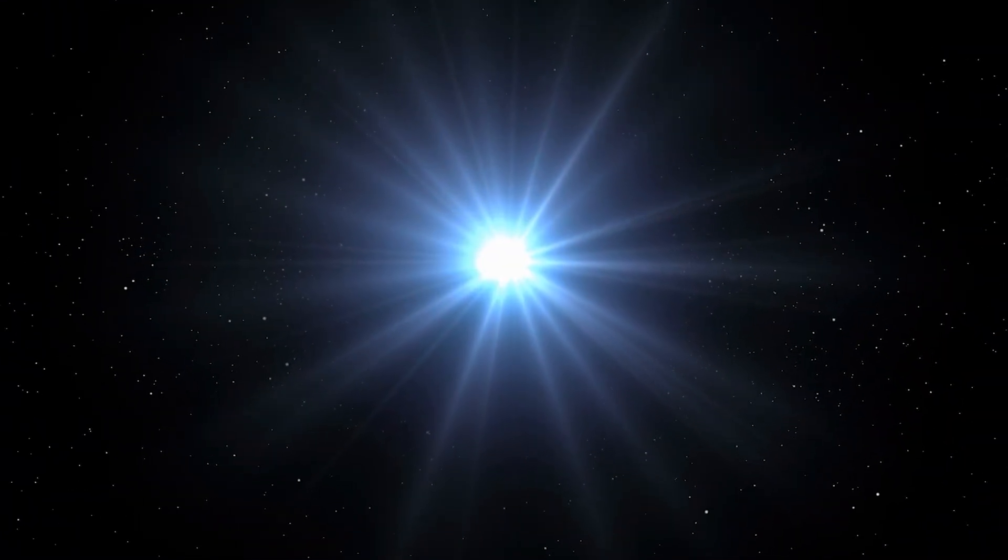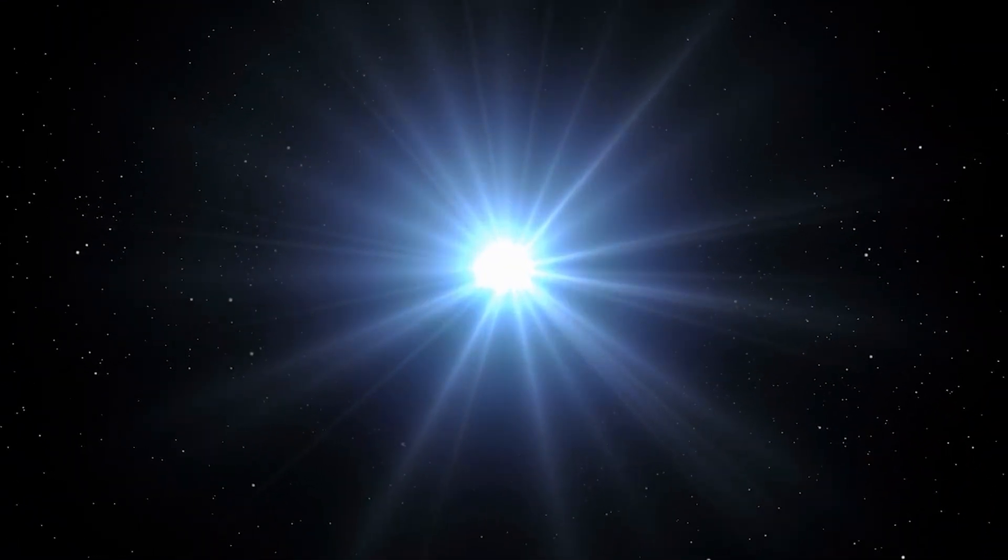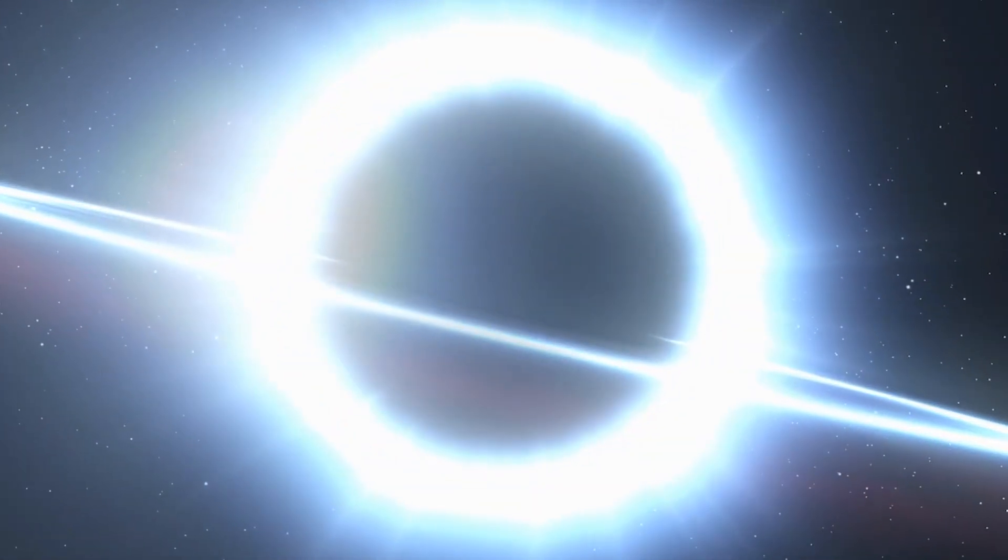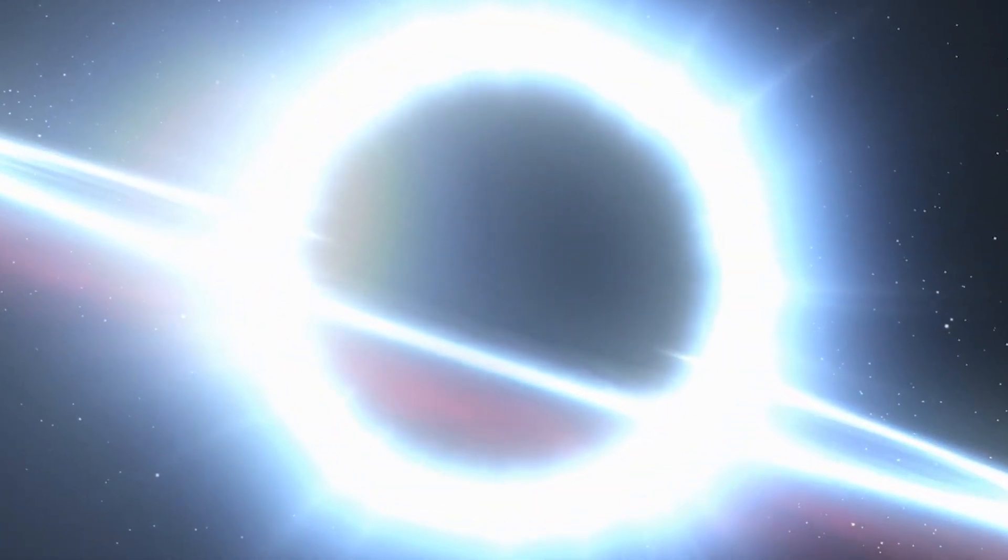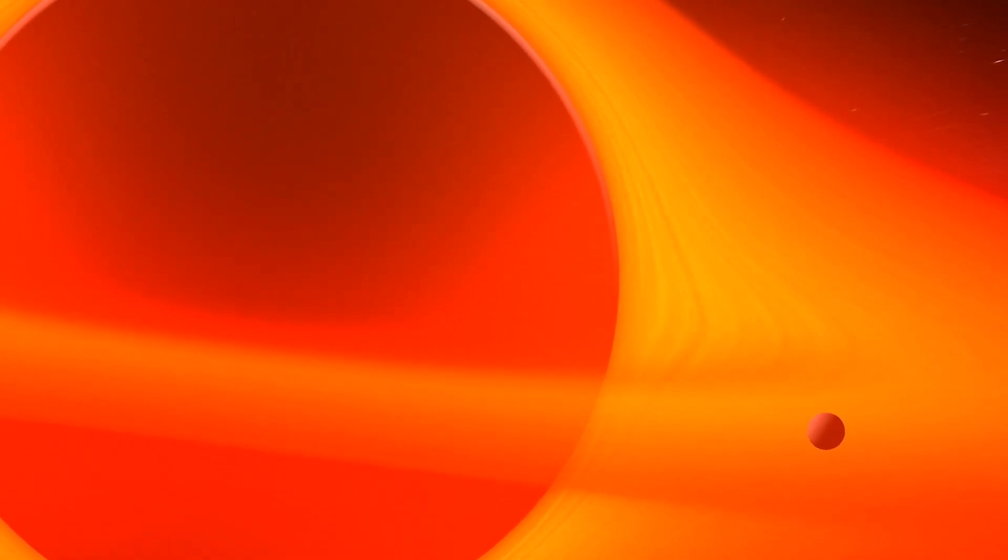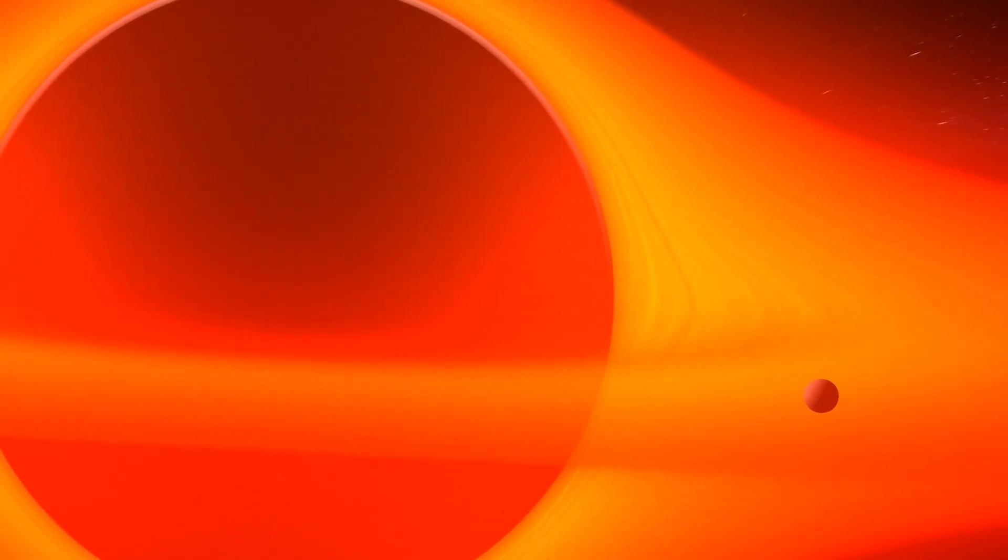So how are black holes formed? Could any star morph into a black hole? The scientific community continues to grapple with these questions. However, the most widely accepted theory is gravitational collapse, suggesting that black holes originate from stars 2.5 to 5.6 times heftier than our sun.